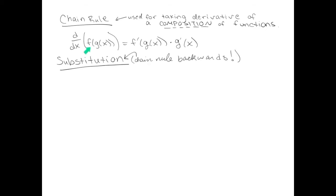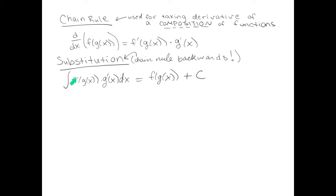If the derivative of f(g(x)) equals the chain rule formula, then the antiderivative of that chain rule formula equals f(g(x)), plus c. This formula is a bit complicated — you have the derivative of f composed with g, times the derivative of g. Matching up some quantity with this long formula is the challenge of substitution. In order to make that challenge a bit easier, we introduce some notation.